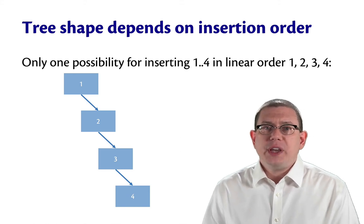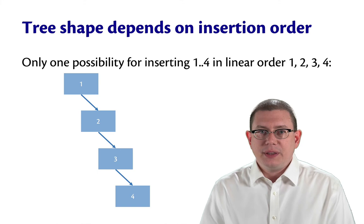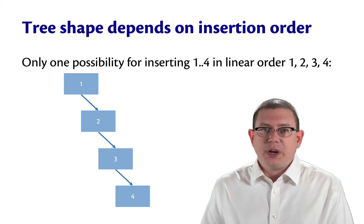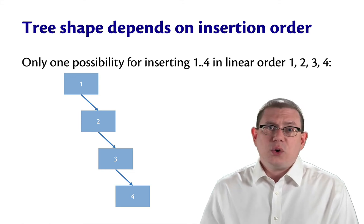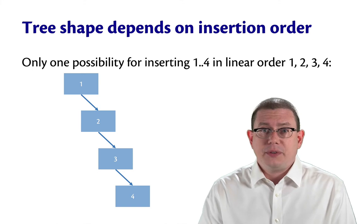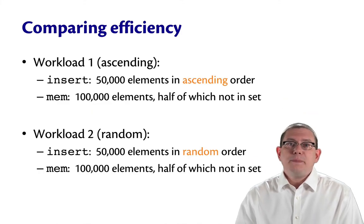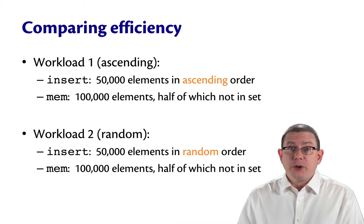We call such a tree unbalanced. It's leaning in one direction. In this case, it's leaning to the right because we were inserting in ascending order. If we happened to insert in descending order, we would get the symmetric case of a tree that's leaning to the left. This makes a big difference. The insertion order really matters to the performance of a set based on binary search trees.